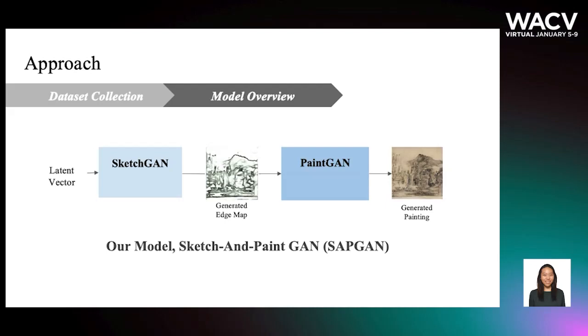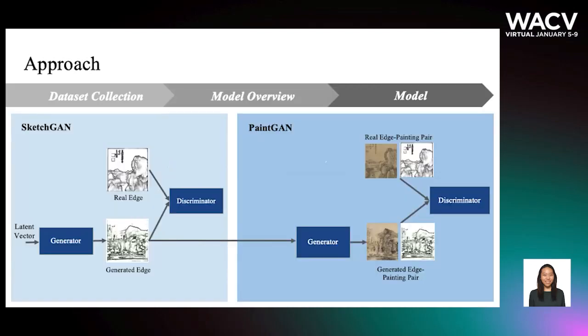To create the best-performing model, we test combinations of different state-of-the-art GANs, such as StyleGAN2 and Spade, as candidates for SketchGAN and PaintGAN. SketchGAN is trained on holistically nested edge detection edge maps, which are extracted from our dataset. PaintGAN is a conditional GAN, trained on edge-painting pairs.